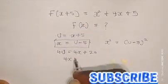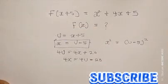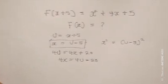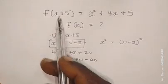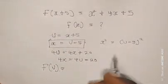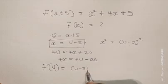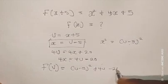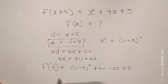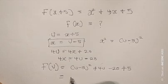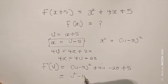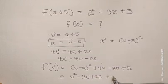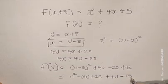So 4x equals 4u minus 20. Now we have everything we need. Let's substitute back — u equals √(x+5). We said x² equals (u-5)², and for 4x we have 4u minus 20, plus 5. When you expand (u-5)², this gives us u² minus 10u plus 25, plus 4u, minus 15.